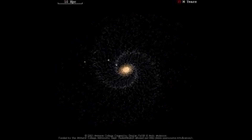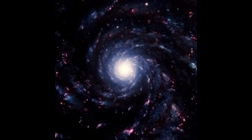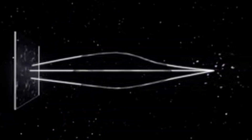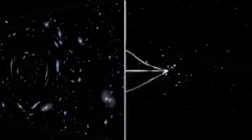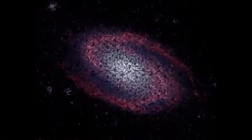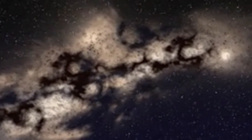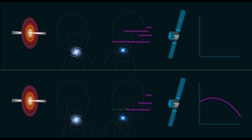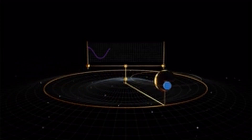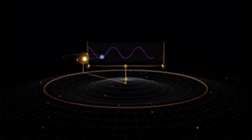To understand the particle horizon, we need to introduce the concept of conformal time. Conformal time is a time coordinate that accounts for the expansion of the universe. It is not the actual age of the universe, but rather the time it would take for a photon to travel from our location to the furthest observable distance if the universe stopped expanding. Mathematically, the conformal time η is given by: η = ∫₀ᵗ dt′/a(t′), where t is the cosmic time and a(t) is the scale factor of the universe at time t.